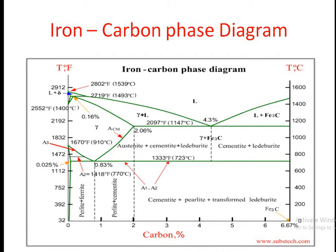The different phases visible here include austenite, cementite, ledeburite, and cementite plus ledeburite — all of which you have already learned in the iron-carbon phase diagram in metallurgy. We need these temperature lines because before proceeding to case hardening, we will first understand what is meant by the hardening process.